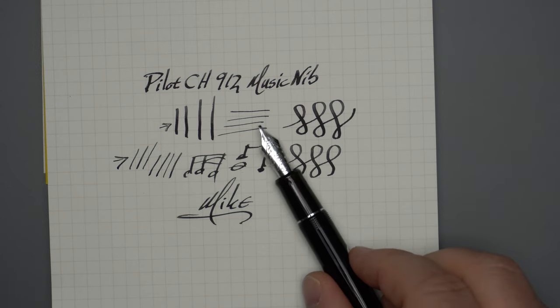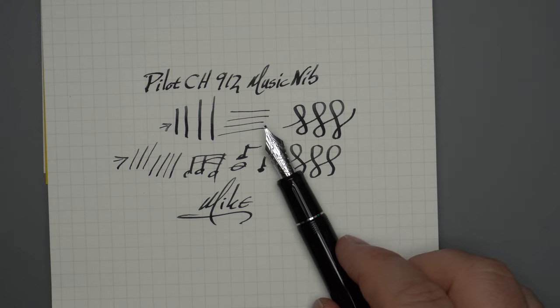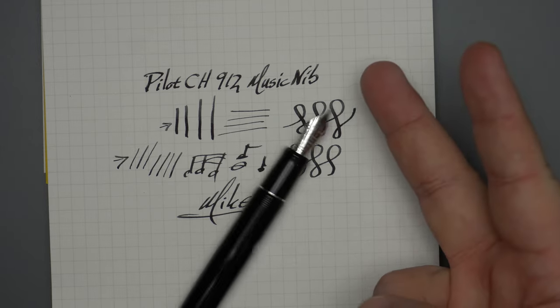So there you go. That's the music nib for the Custom Heritage 912. And until another video, peace out.